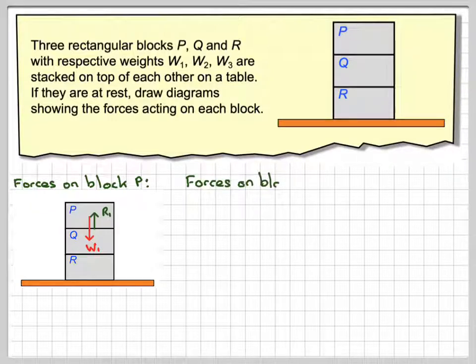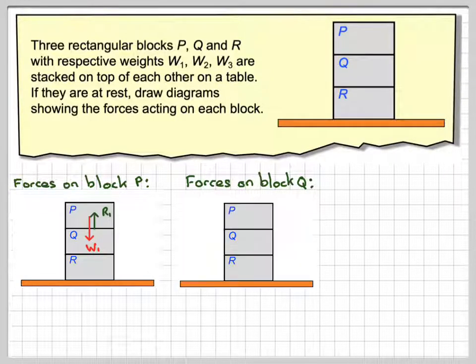Now, for forces on block Q, there will be the weight of block Q acting downwards. There will be the reaction between block Q and block R acting upwards, but there will also be the reaction of block P, the same as this one, but now acting downwards.